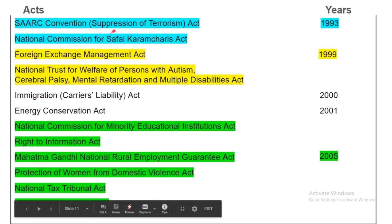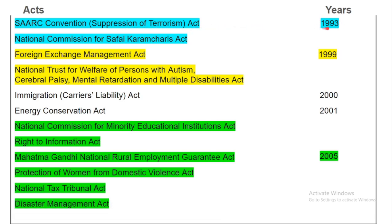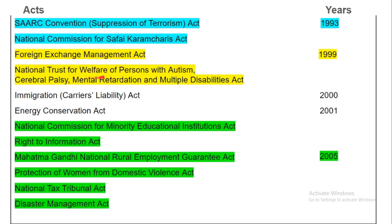SAARC Convention Suppression of Trafficking Act and National Commission for Safai Karmacharis Act — these two acts passed in 1993. Foreign Exchange Management Act was passed in 1999. National Trust for Welfare of Persons with Autism, Cerebral Palsy, Mental Retardation and Multiple Disabilities Act also passed in 1999.